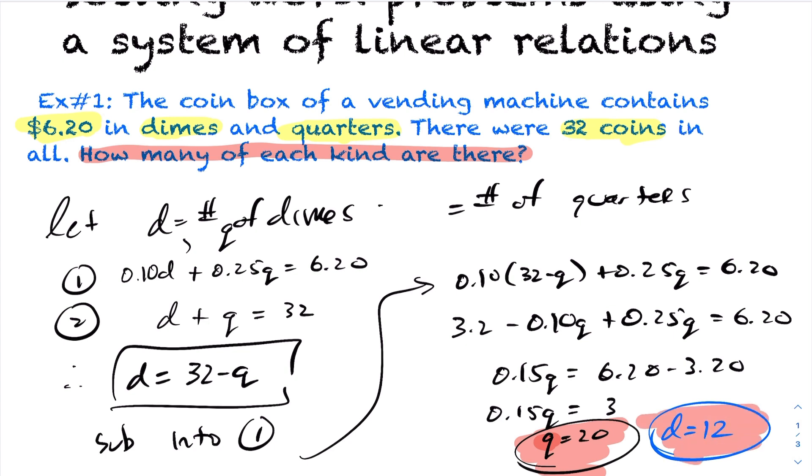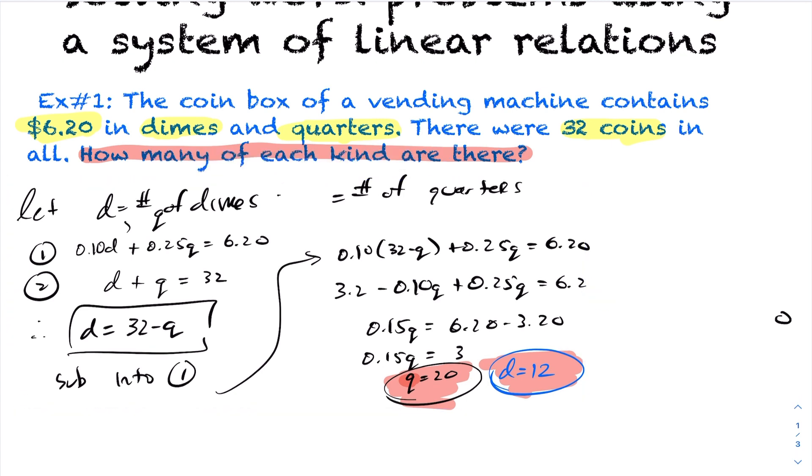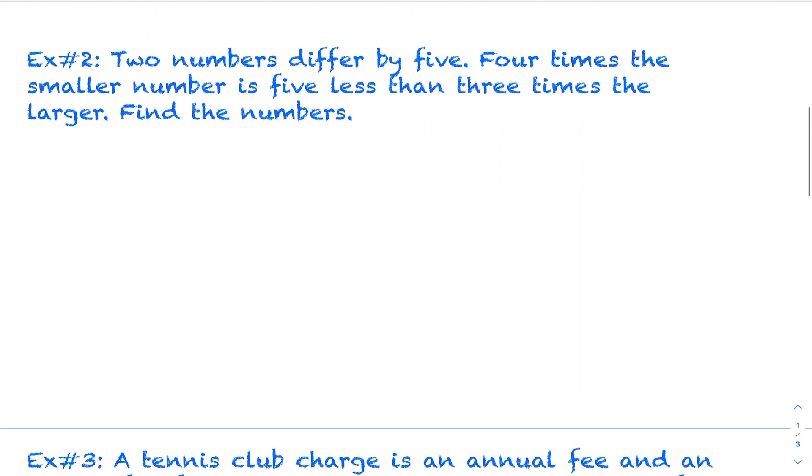Again, you could get that value just by subbing it back into your equation. I could have taken this 20, subbed it into my first equation or my second. Obviously, subbing it into your second is a lot easier. So from here, we know that therefore we have 20 quarters and 12 dimes. All right, let's take a look at the next example.